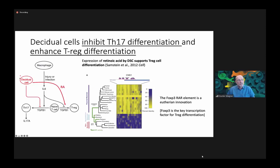There's another branch of signaling from the decidual cell that consists in the secretion of retinoic acid. Retinoic acid specifically enhances the differentiation of T cells into regulatory T cells. This ability to react to the presence of retinoic acid is specifically limited to the eutherians, because the key transcription factor for Treg differentiation, FOXP3, has a retinoic acid response element only in the genomes of eutherians — of placental mammals — but not in marsupials or any other vertebrates. This is another line of evidence that the evolution of the decidual cell is a critical step in changing the immune status at the fetal-maternal interface.